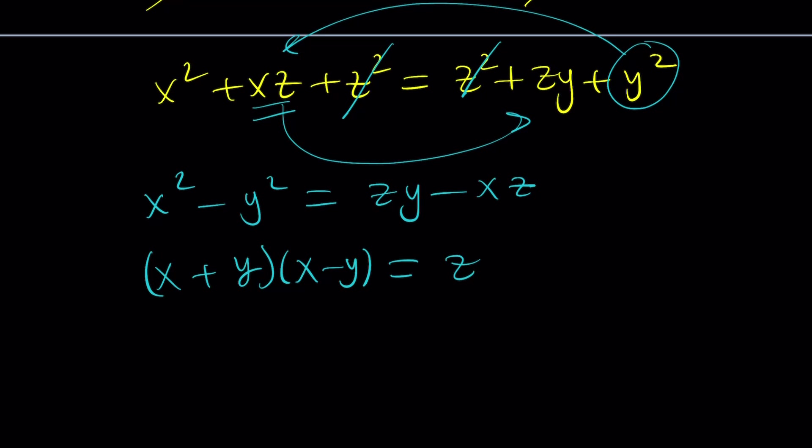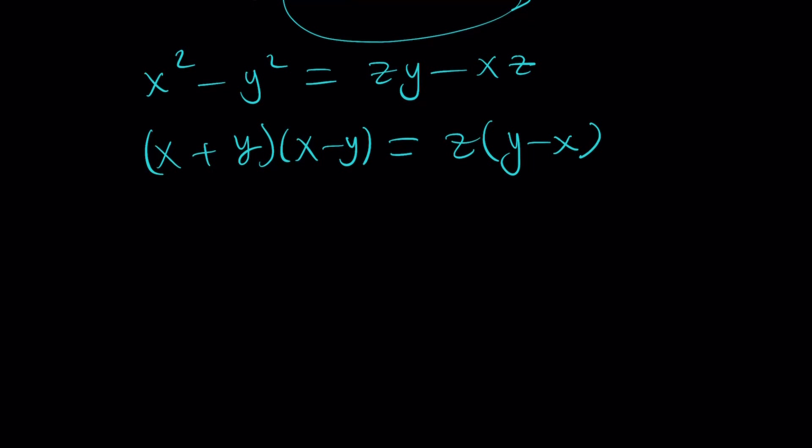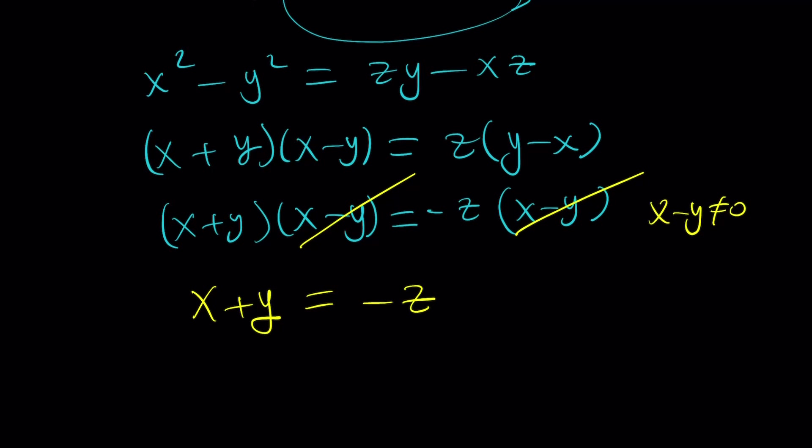And when we do, and of course this is an x minus y, that's a y minus x. Here's the trick. You can negate x minus y to get y minus x. Make sense? Isn't that awesome? So they're opposites. They can cancel, but they leave a negative one. So now we can go ahead and cross out x minus y. Remember, x minus y does not equal zero because x, y, z are distinct. So from here we get, ta-da! x plus y equals negative z. Is that important? Absolutely.